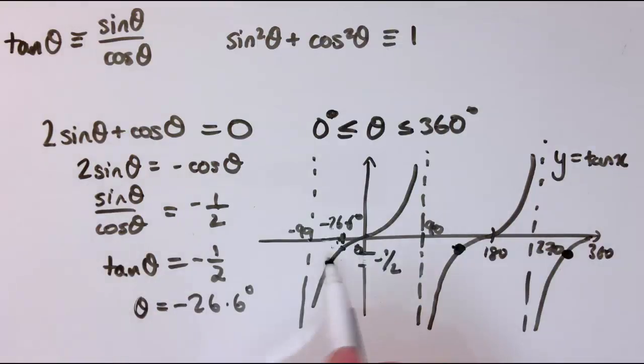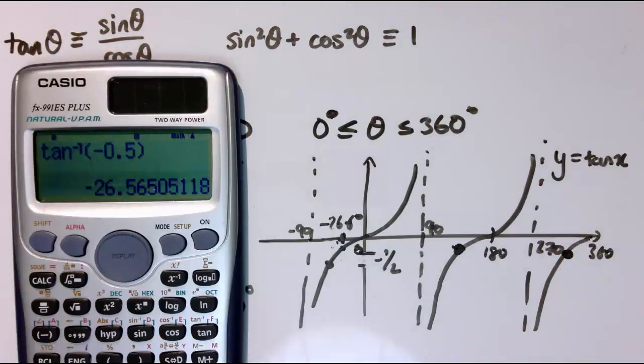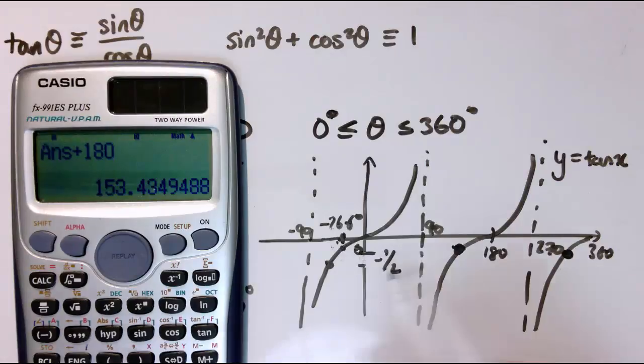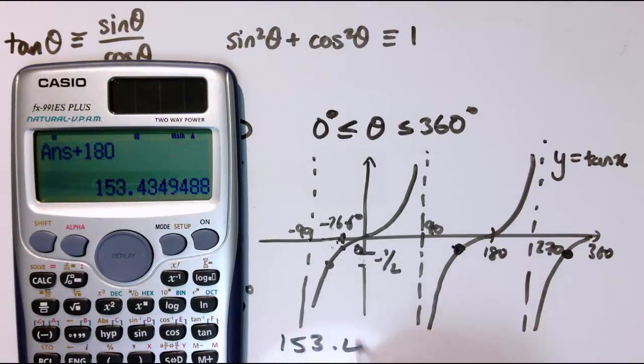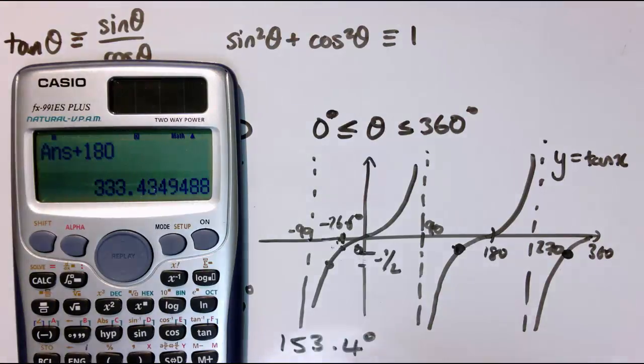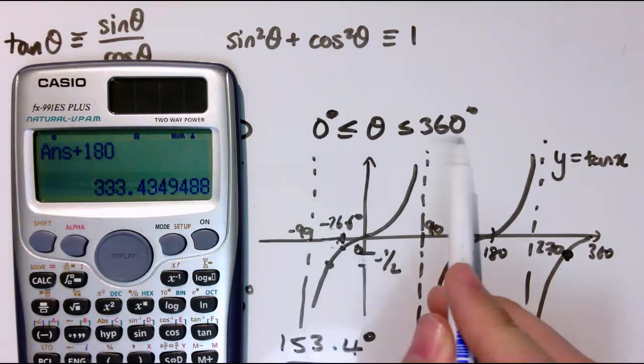So I can add or subtract 180 degrees, and I still get an answer. So if I add 180, that takes me to this point here. So I've got 153.4 degrees, and if I add 180 again, that gives me 333.4 degrees, so that gives me this value here. So those are the two values that lie between 0 and 360.